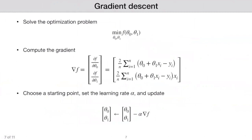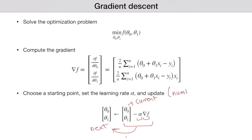Let's recap the main points. The goal was to find the minimum value of this function with respect to theta zero and theta one. The first step is to find the gradient — that's the main thing you need. Then you start with some current or random value, use your learning rate or step size, and multiply by the gradient. This gives you the new update or next point, and you repeat this as many times as you want using a number of iterations.